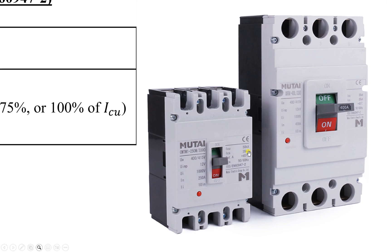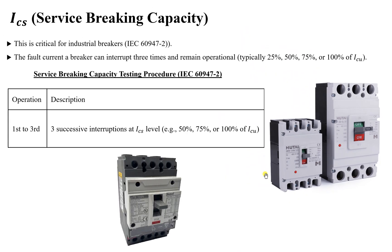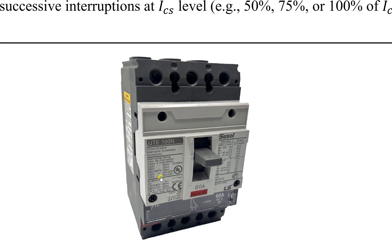The reason ICS is lower than ICU is cost. If we designed the breaker to interrupt the maximum fault current several times, it would be very expensive because it must withstand that full fault current repeatedly. To save on design costs, we have a breaker that can interrupt the worst case at least once, and interrupt a lower value several times.